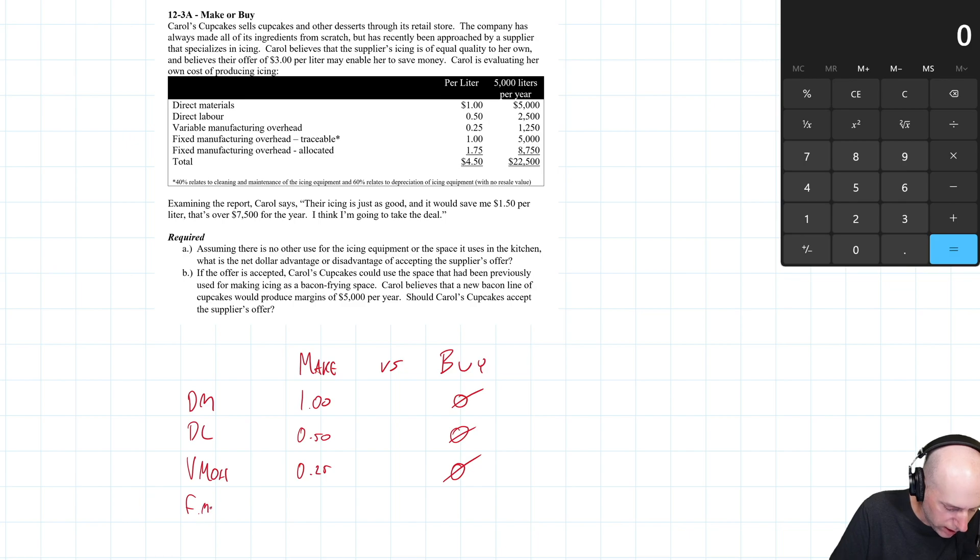Fixed overhead traceable had a little asterisk. And I'd like to read the asterisk before I make a determination here. It says 40% relates to cleaning and maintenance of the icing equipment. Okay. Let's just talk about that 40%. So it's a dollar of fixed overhead per unit for 5,000 liters. 40% of this is for cleaning and maintenance of icing equipment. We're not going to be cleaning or maintaining our icing equipment if we're not making icing, right? There's no need to clean it. So that 40 cents can go away. That absolutely is a relevant cost. If we buy the stuff, we're not going to be maintaining it. If we continue to make, that 40 cents continues to be a relevant cost.